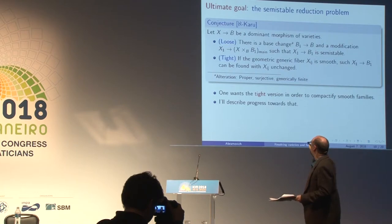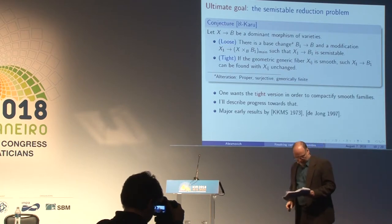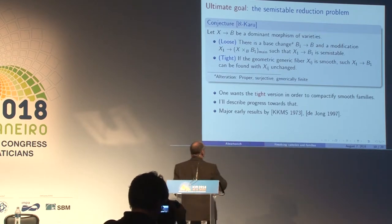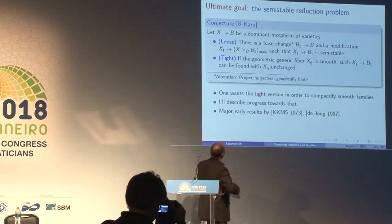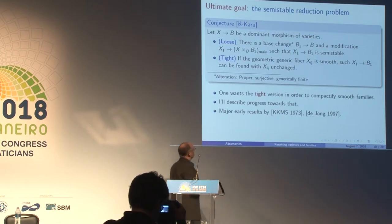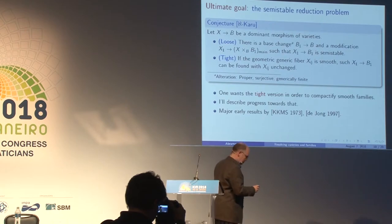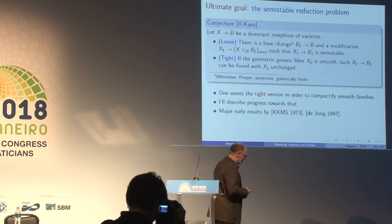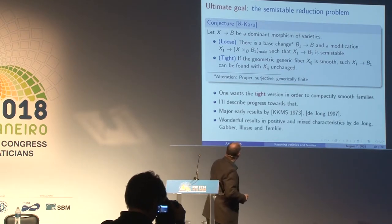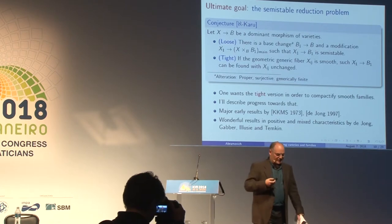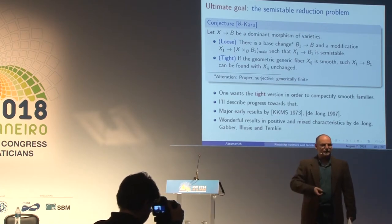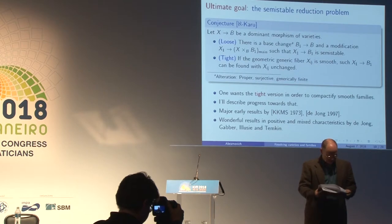I want to mention that already Kempf-Knudsen-Mumford-Sandona had the result on a one-parameter base. Everything that follows uses the toroidal language that they introduced. And of course De Jong had wonderful results which a lot of what I describe follows. De Jong, followed by Gabber, Illusie, and Tjomkin, proved wonderful results in characteristic p, which I will not focus on today.